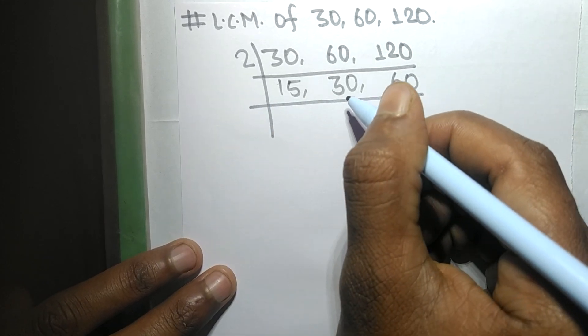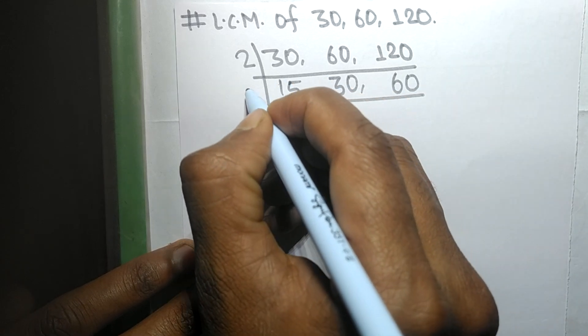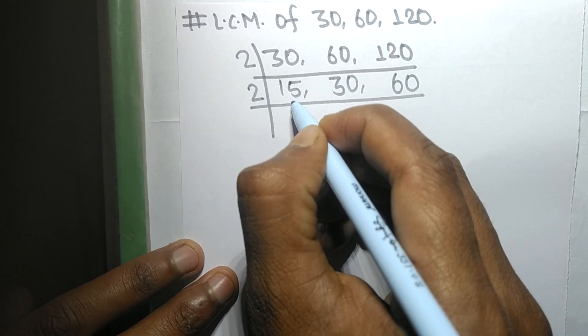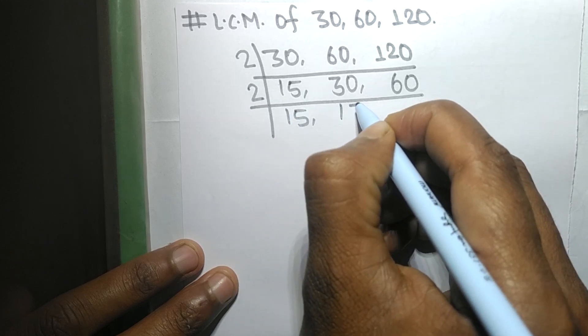Now 30 and 60 are exactly divisible by 2. 15 is not divisible, so it stays the same. 2 times 15 means 30, 2 times 30 means 60.